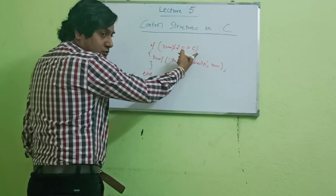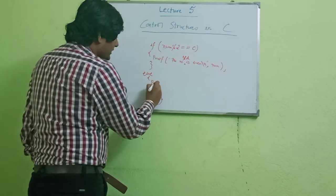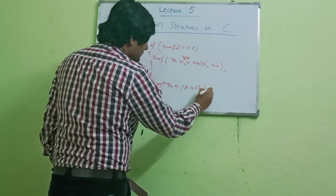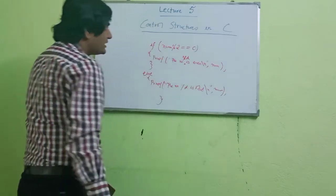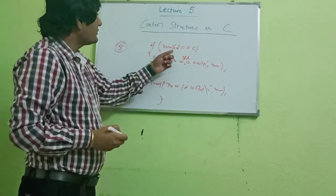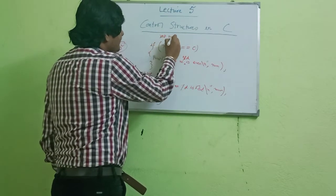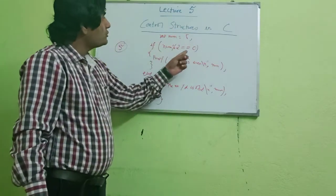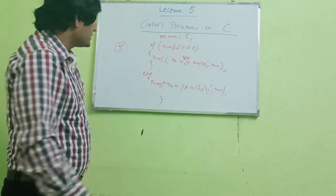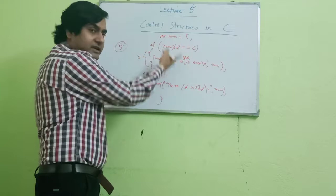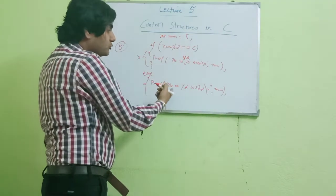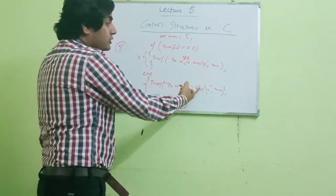If number modulo 2 is not equal to 0, then print 'the number %d is odd'. Now if my number is 5, what will be the output? Suppose number is equal to 5. If (number % 2 == 0) — this condition is false because 5 modulo 2 is 1, not 0. So the if part will not be executed; the else part will be executed, and the result will be 'the number 5 is odd'.